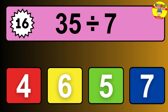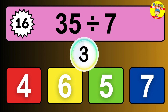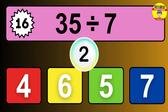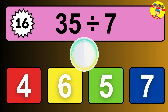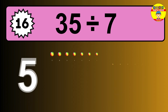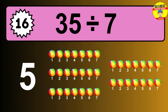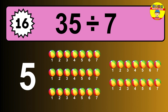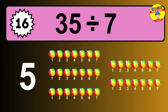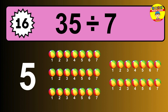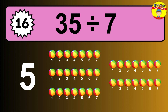35 divided by 7 is... time to think. Let's go to the solution. Divide the number 35 by 7. Each group contains 7 units. So dividing 35 by 7 results in 5 equal groups. Thus, the result is... 35 divided by 7 equals 5.